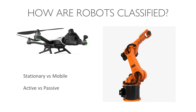Robots can also be classified as active or passive. An active robot essentially performs its activities without any human interaction — it's typically programmed by a computer and performs those complex interactions on its own. A passive robot would require intervention by a human to allow the activities to be performed.